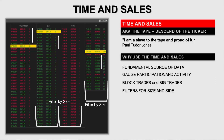The time and sales, or tape, is where we can monitor the order flow, participants that are in the market, and the tempo at which it moves. It indicates the balance or imbalance of forces — in a mixed tape, if we see a lot of greens or a lot of reds, that is indicating the balance or imbalance of forces between buyers and sellers.